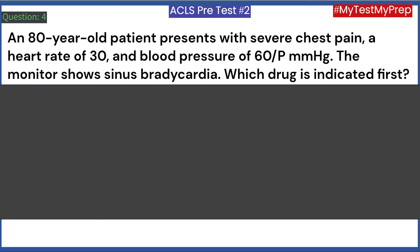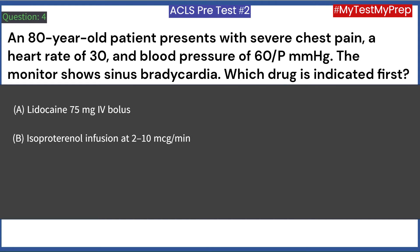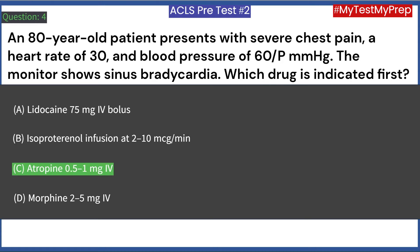An 80-year-old patient presents with severe chest pain, a heart rate of 30, and blood pressure of 60 mmHg. The monitor shows sinus bradycardia. Which drug is indicated first? A. Lidocaine 75 mg bolus. B. Isoproterenol infusion at 2 to 10 mcg/min. C. Atropine 0.5 to 1 mg. D. Morphine 2 to 5 mg. Answer: C. Atropine 0.5 to 1 mg.